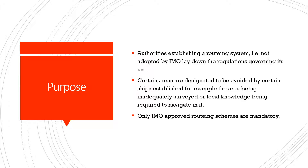Authorities establishing a routing system that is not adopted by the IMO lay down the regulations governing its use. Certain areas are designated to be avoided — for example, areas that are inadequately surveyed or where local knowledge is required to navigate. Only IMO-approved routing schemes are mandatory for use by ships.